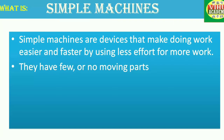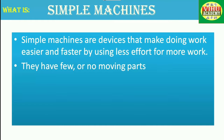Sometimes we find it difficult to do certain work with our hands, so we use tools or machines to make our work easier as it requires less energy. Simple machines are devices that make doing work easier and faster by using less effort for more work. They have few or no moving parts. So there are 6 types of simple machines.